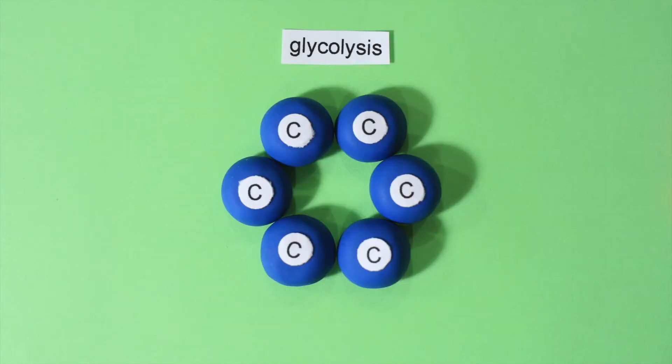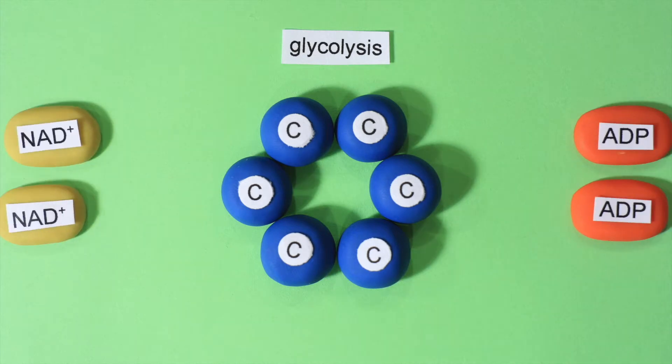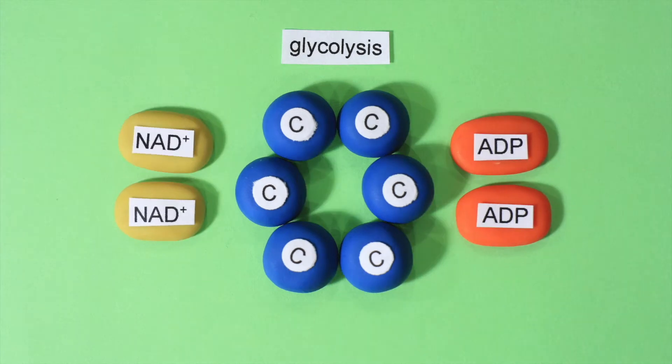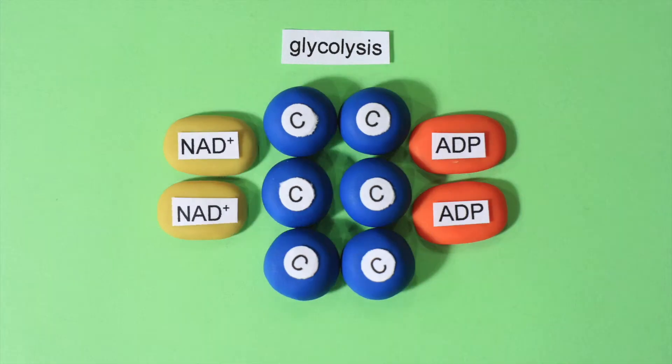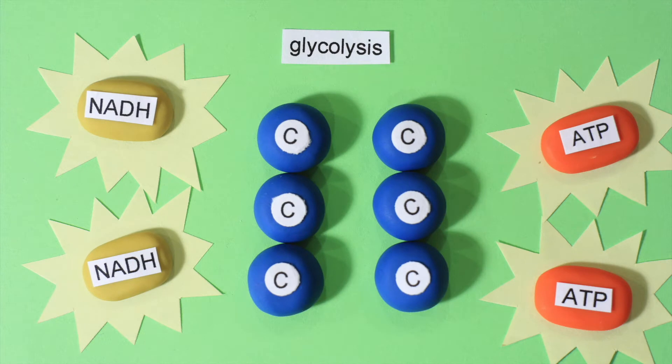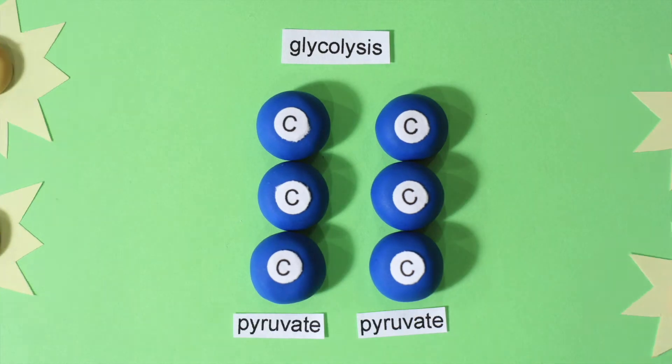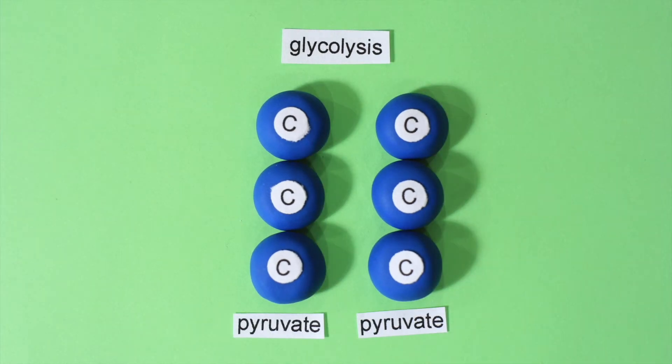The space between the organelles is called the cytoplasm, and this is where glycolysis occurs. One 6-carbon molecule of glucose enters the process. The glucose splits into two 3-carbon molecules, releasing energy that is passed onto four energy carriers. The result is two pyruvates.